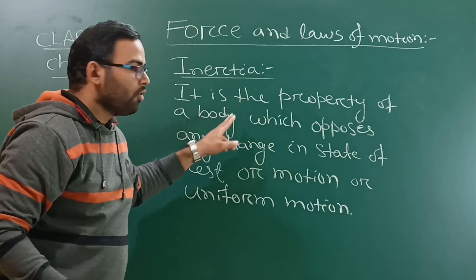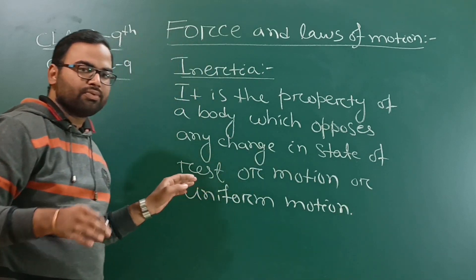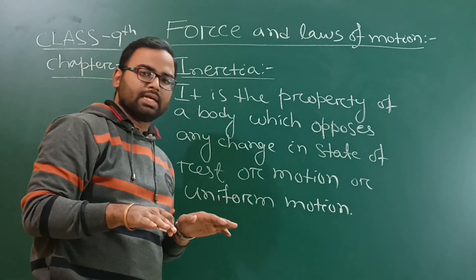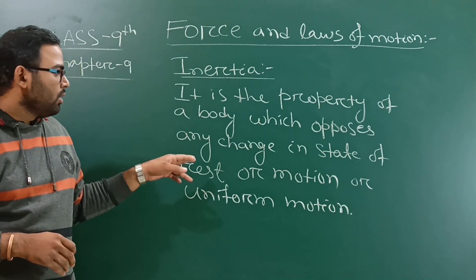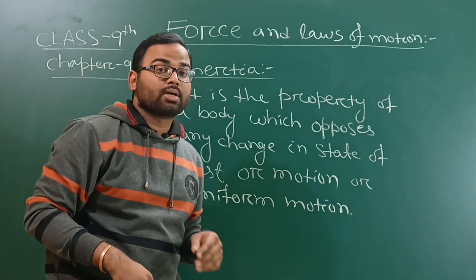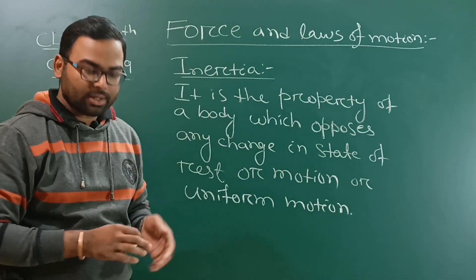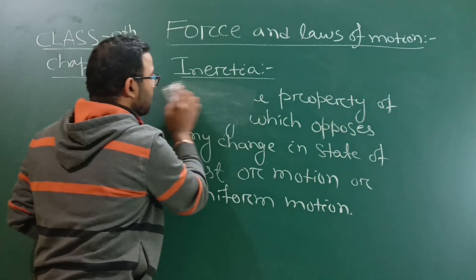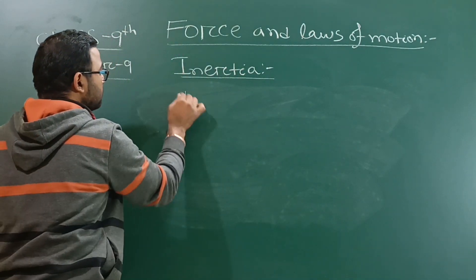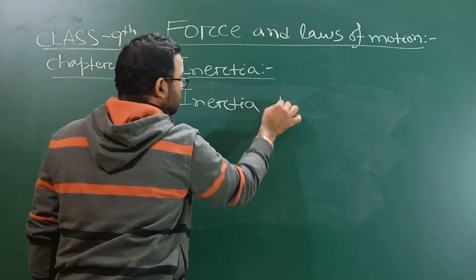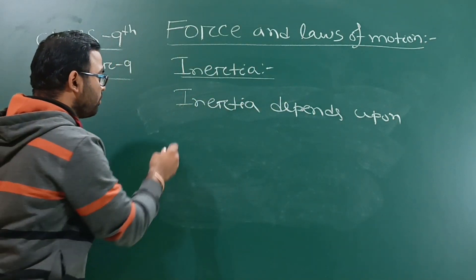Inertia is the property of a body which opposes any change in the state of rest. If a body is at rest then it will continue in the state of rest, which is the first law of Newton — Newton's first law of motion. Or if a body is in motion, it will continue in the state of motion, and inertia is the property which opposes that change. Inertia also depends on the mass of the body.